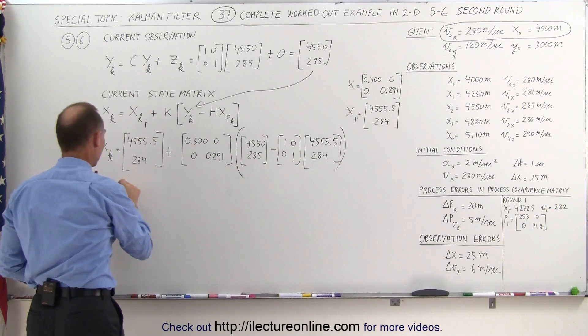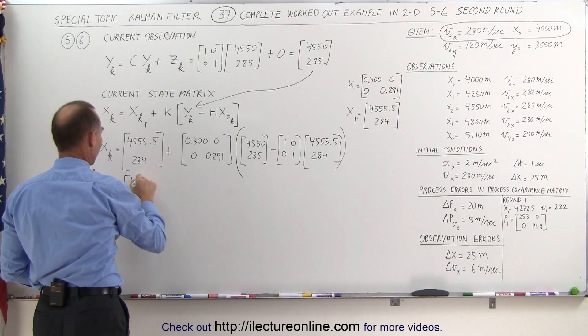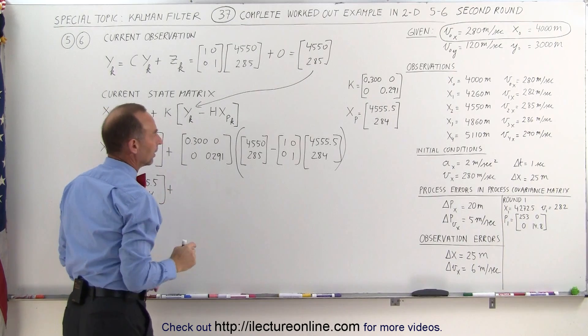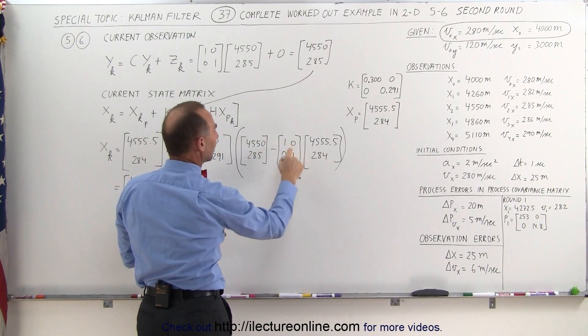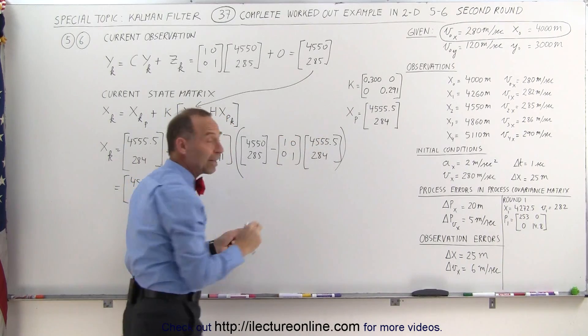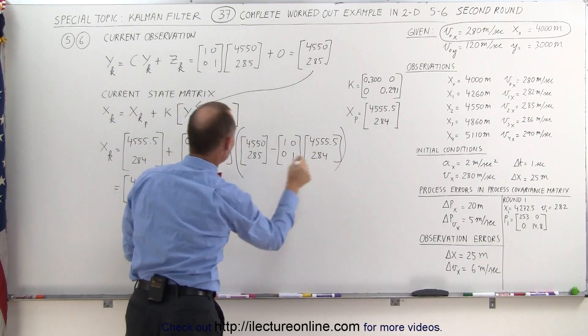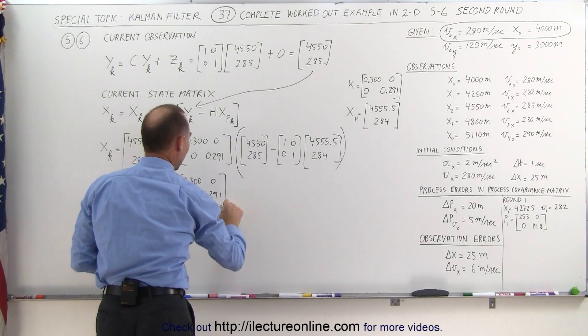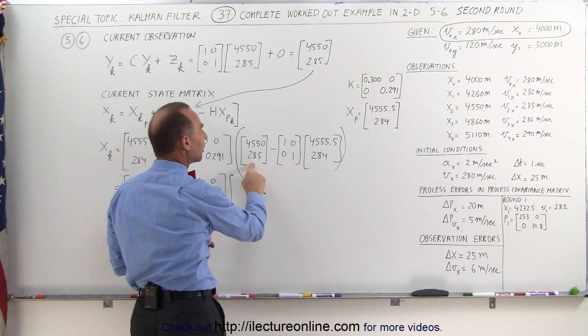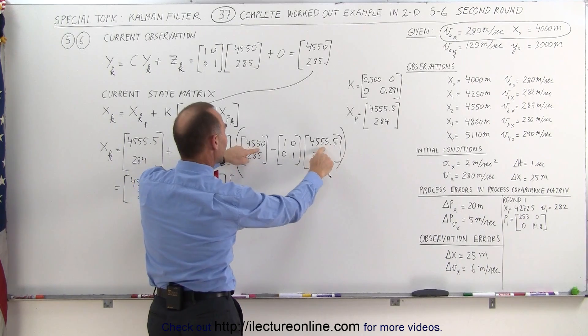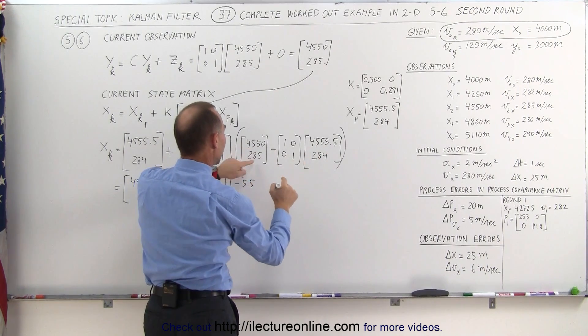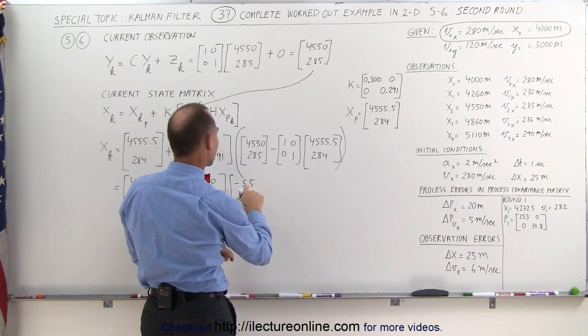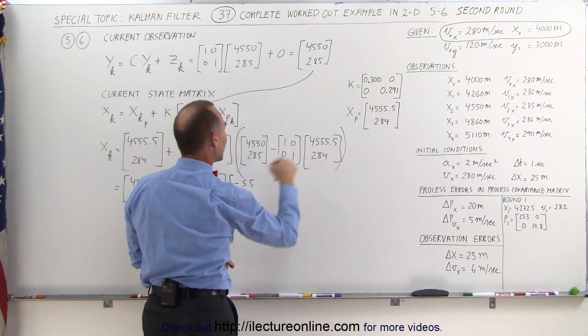Simplifying this, we get the following. This becomes the matrix 4555.5, 284, plus. Now, the first thing we need to do is subtract these from one another. Of course, when you multiply times identity matrix, you get the same matrix back. So, we simply get this minus this. So, we multiply the Kalman gain times the difference between the observed value and the predicted value. So, this minus that, that gives us a minus 5.5, and this minus that gives us a 1.